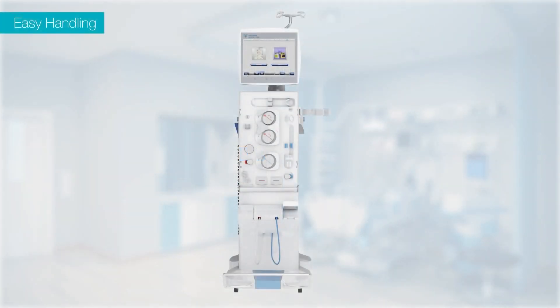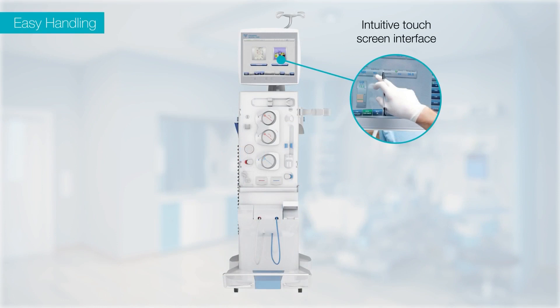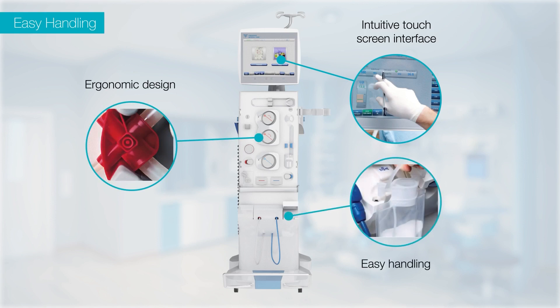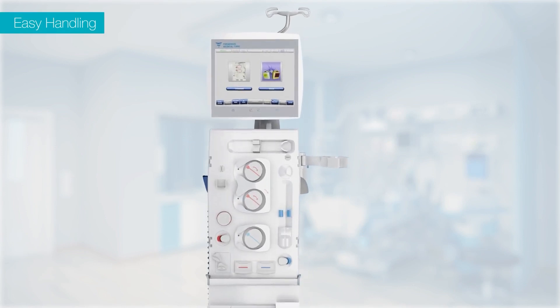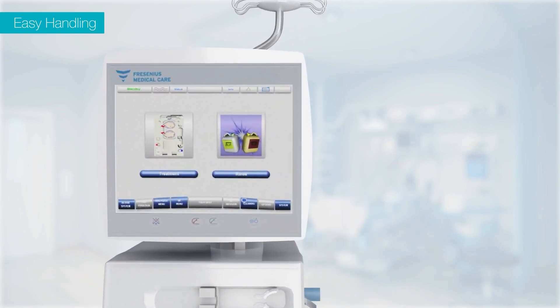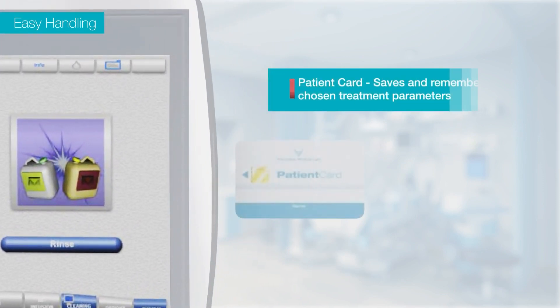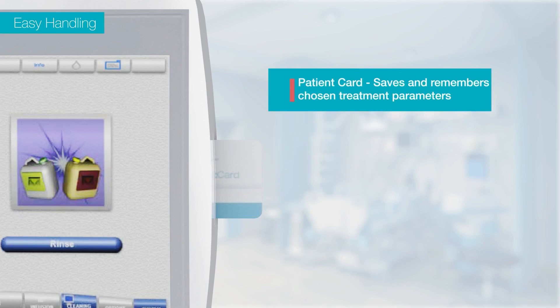The 5008S therapy system has an intuitive touchscreen interface that is smartly arranged in chronological order of treatment. Due to its ergonomic design, it is highly convenient for a single user to handle blood, dialysate and buy-back ports. The patient card can save and remember the chosen treatment parameters, thus reducing a lot of effort during subsequent therapies.